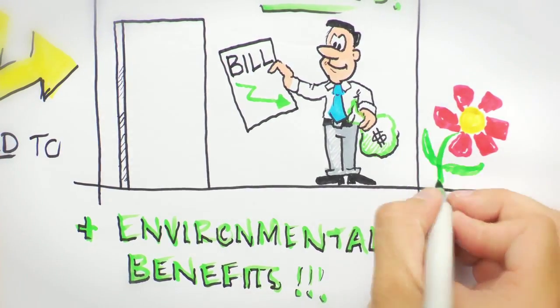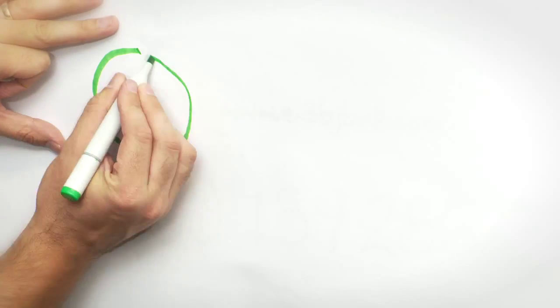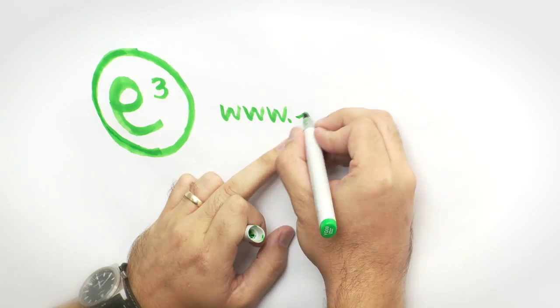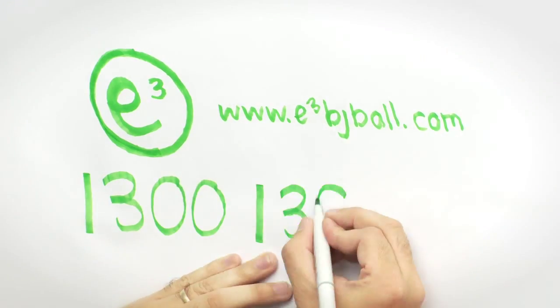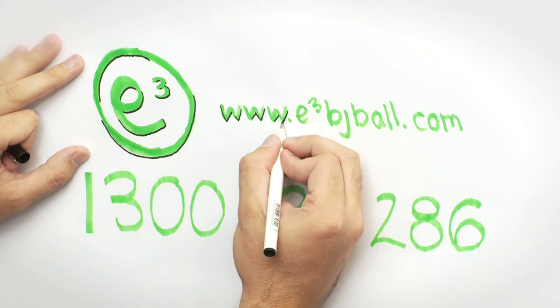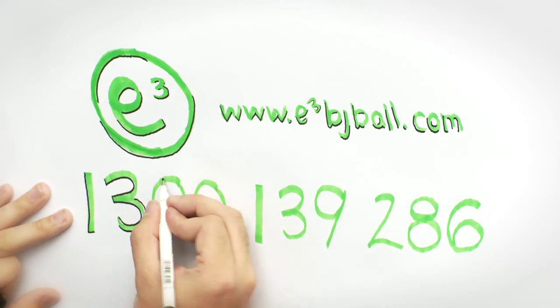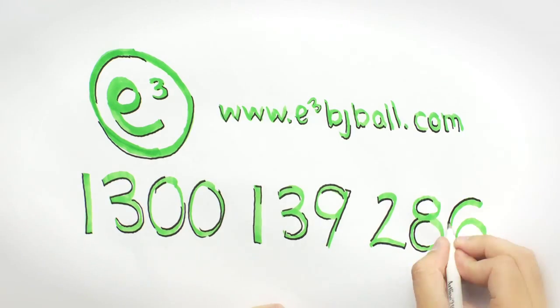So how do you start saving money and greening your business? For more information, visit us at www.e3bjball.com or give us a call on 1300 139 286.